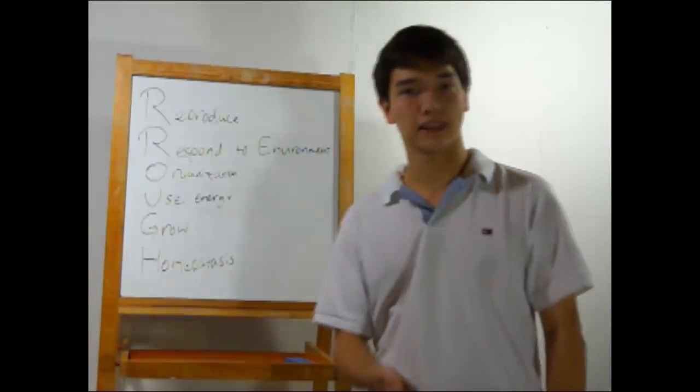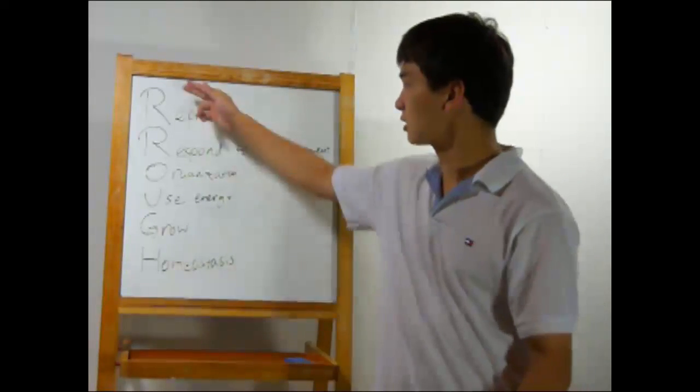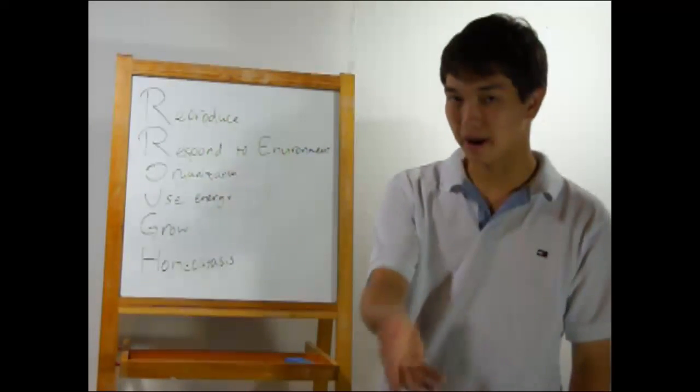These are the six main characteristics of living things, and I know it's a lot to remember, so you can use the mnemonic here, RROUGH. If you will, life is rough.